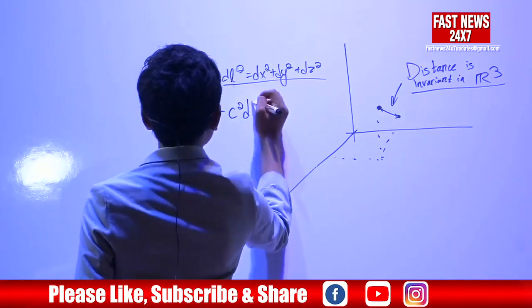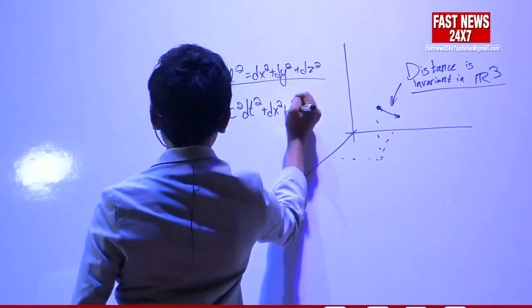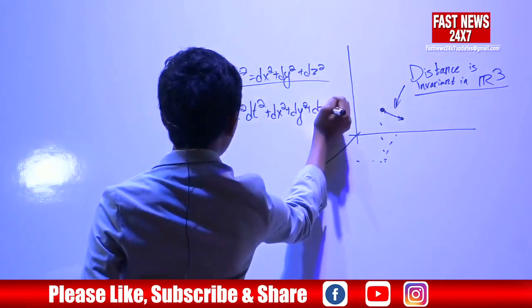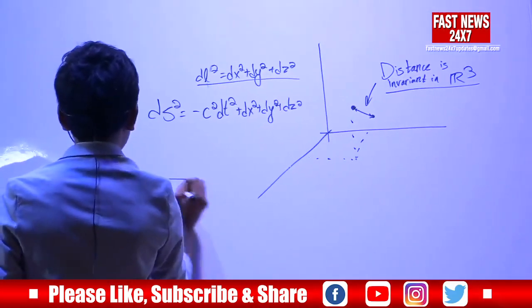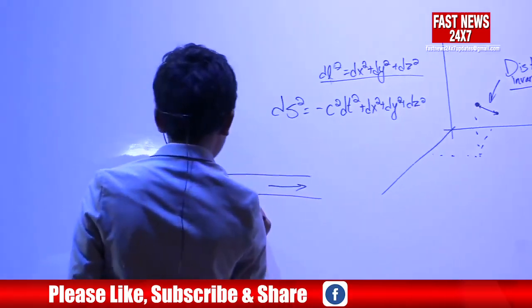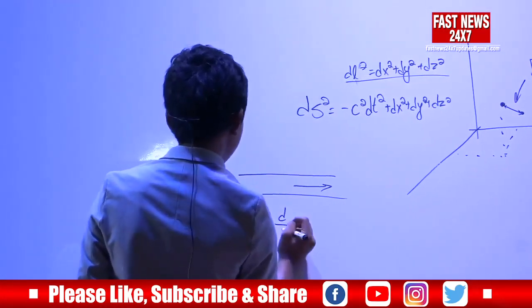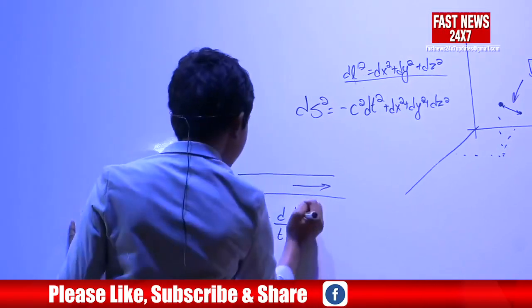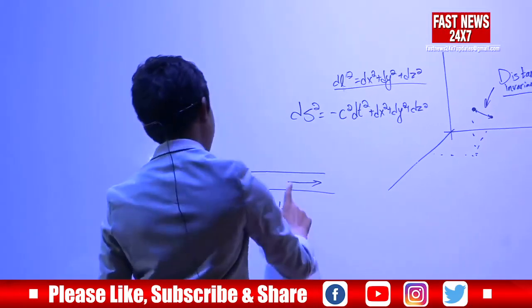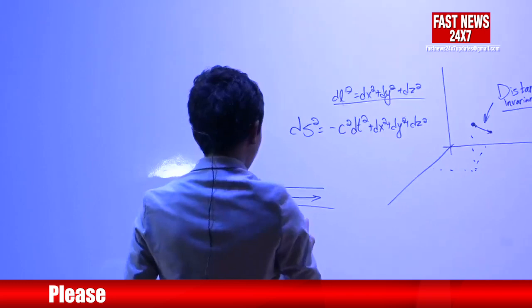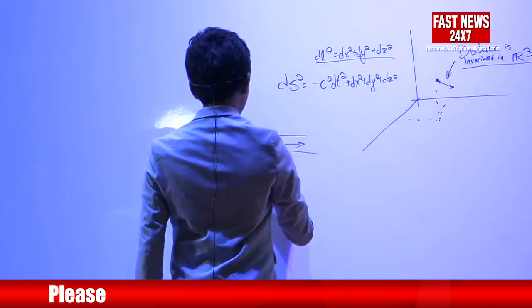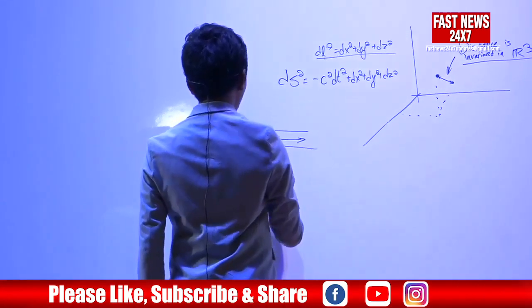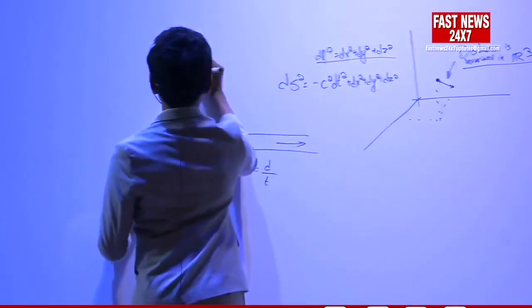This is what leads to time dilation. I'll give a Neil deGrasse Tyson way of explaining time dilation and also an actual mathematical way. Speed equals distance over time. Distance is invariant and seemingly so is time in Newtonian mechanics, so velocity is supposed to change to accommodate all reference frames. Let me explain it a little bit better.